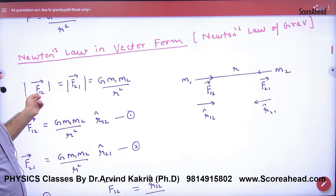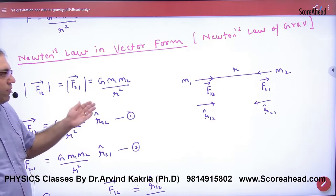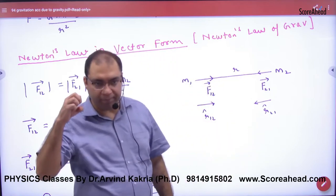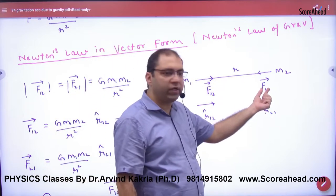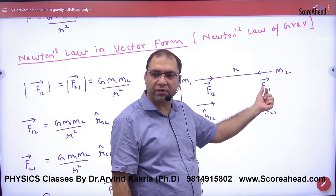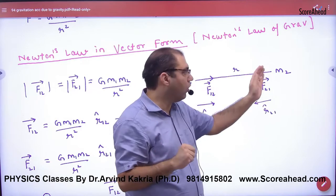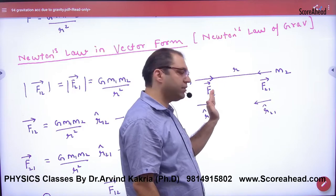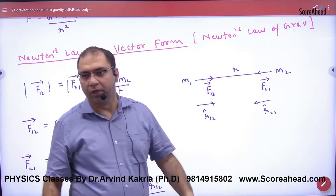If we write Newton's law in vector form: two masses m1 and m2. m1 attracts m2—the force is F21. The notation 2,1 means the force on mass 2 due to mass 1. If m2 attracts m1, the force is F12.